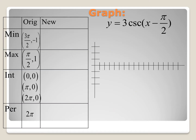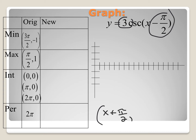For our example, we're going to identify our a, b, and c values and use those to help us graph our sine function first, then use it to sketch the cosecant. Our function has an a value of 3 and a c value of negative pi over 2. Plugging into our equation gives us x plus pi over 2, and we multiply y by 3 to identify our new points.